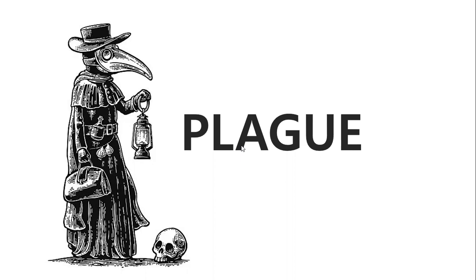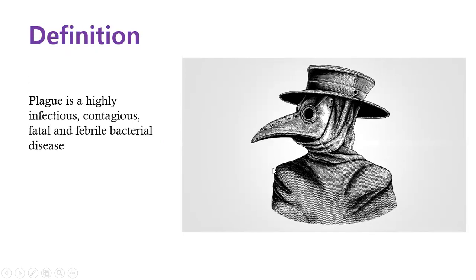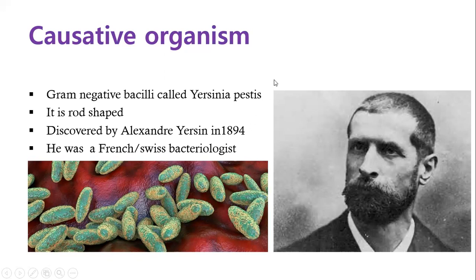Let's look at plague — a very interesting disease because it's one of the oldest diseases described, even found in the Bible. Plague as a disease is defined, and we'll look at the causative agent through to prevention and control measures. This is a highly infectious and contagious disease that leads to death, caused by a bacterium called Yersinia pestis — a rod-shaped bacterium first described by bacteriologist Alexandre Yersin in 1894, who gave it his name.